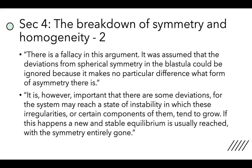Turing identifies a fallacy in the symmetry argument: it was assumed that deviations from spherical symmetry in the blastula could be ignored. His correct argument is that it is important there are some deviations, because the system may reach a state of instability in which these irregularities tend to grow. If this happens, a new unstable equilibrium is usually reached with the symmetry entirely gone — and he then shows this mathematically.